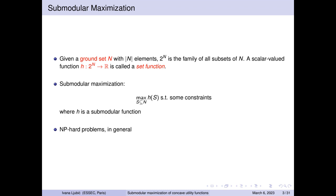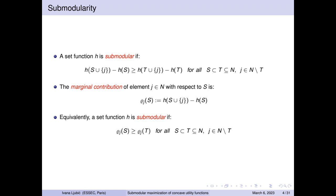Before we start, let's refresh our knowledge about submodular maximization. We focus on set functions, which map subsets of a given ground set N into scalar values. For every possible subset of N, we assign a value — this mapping h is called a set function. If we want to find a subset that maximizes h subject to some constraints, and h is a submodular function, we have a submodular maximization problem. These problems are in general NP-hard and very difficult to solve.